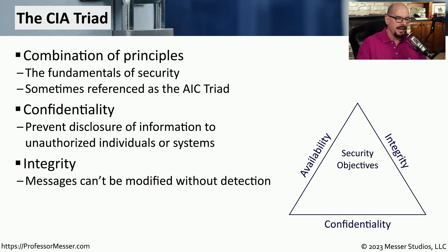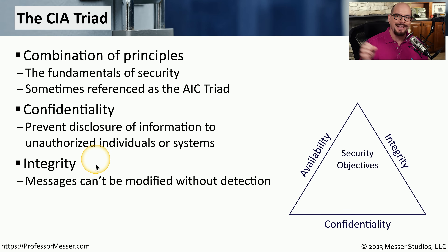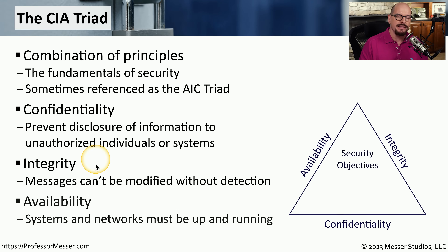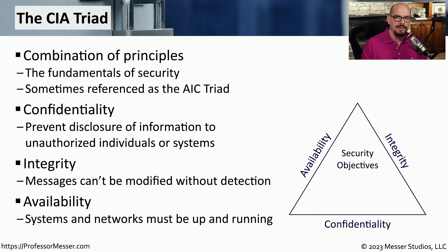The I in CIA is integrity, where if we're sending information from one person to another, we want to be sure that the recipient really is receiving exactly what was sent from the origination. And lastly, the A in the CIA triad refers to availability. We want to be sure that all of our systems remain up and running at all times, even if we're implementing some type of IT security.